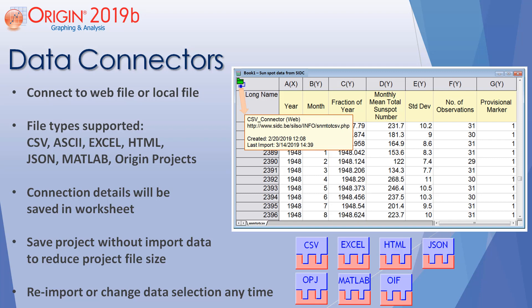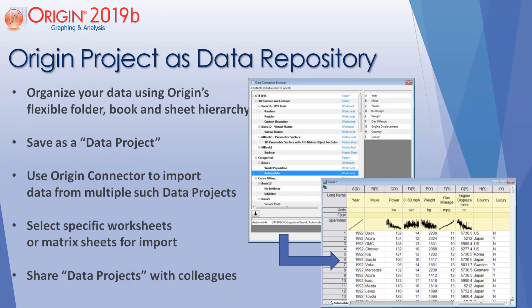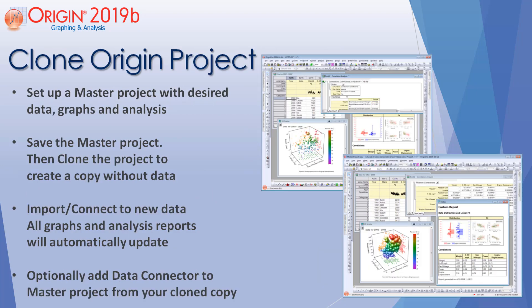The worksheet remains connected to the data source so the data can be re-imported at any time. When saving the project, you can opt to save without the data and re-import again as needed to reduce project file size. The Origin data connector can be used to import data from another Origin project, so Origin projects can be used as a data repository. You can organize your data using Origin's flexible folder, book, and sheet hierarchy, and save as a data project.